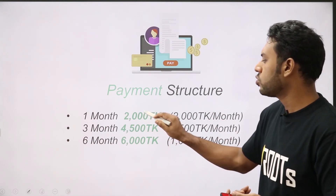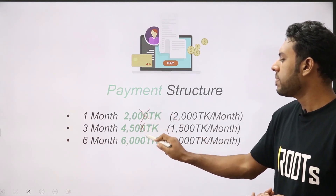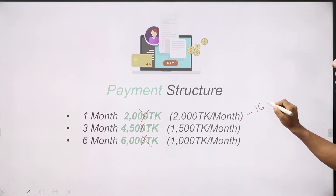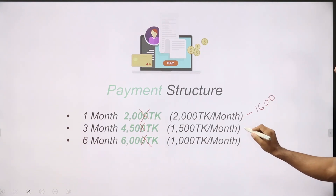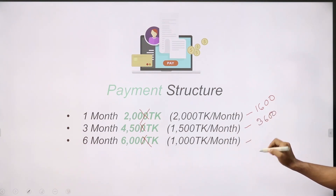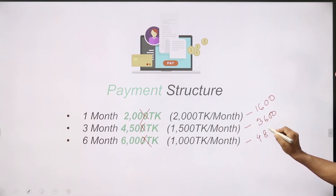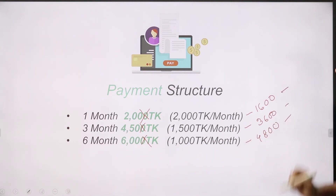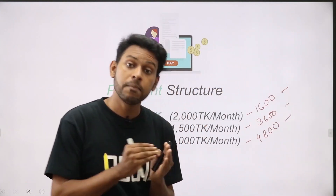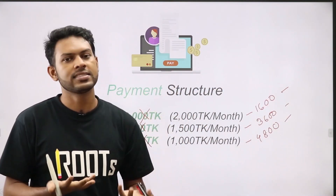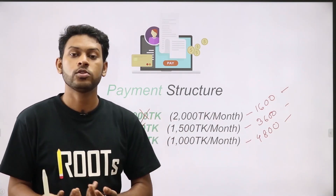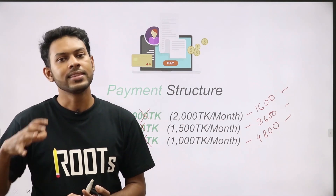We now have a 20% discount. 20% discounted for a 1-month subscription makes it 1,600. A 3-month subscription is now 3,600. You need to participate — if you have a 3-month subscription, you get the class and the live class access.